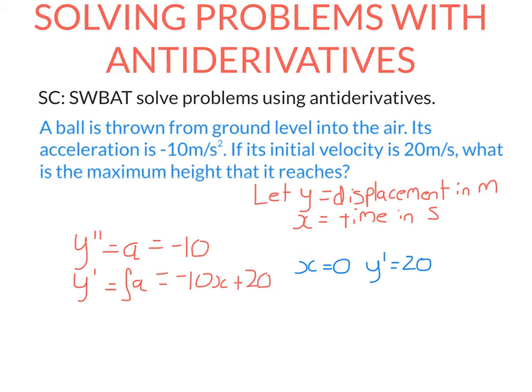So changing c to 20, we have this as our velocity function. The displacement function is just going to be the anti-derivative of the velocity function. Remember, to perform the anti-derivatives, we're going to raise the power by 1 and divide by the new power.